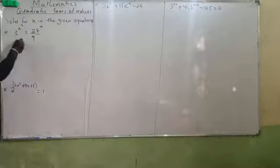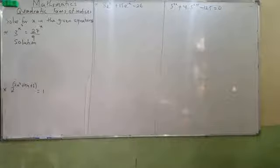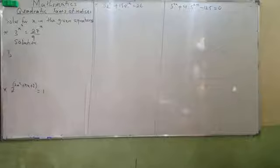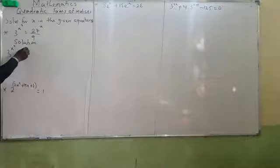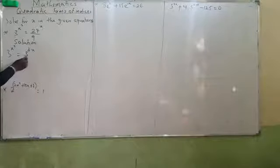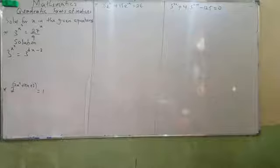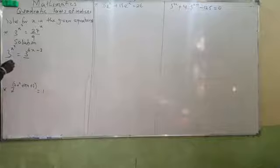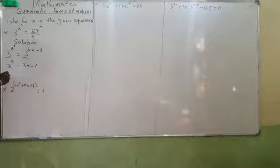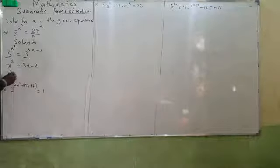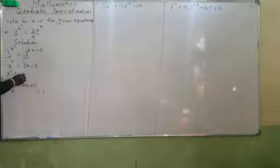I have this problem and the solution to this. This is very simple. I can turn this to 3 raised to the power x² equals to 3 raised to the power 3x minus 2, because of division. Now, it is true that x² equals to 3x minus 2, which gives x² minus 3x plus 2 equals to 0.